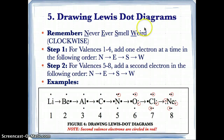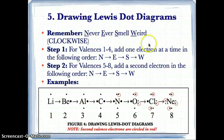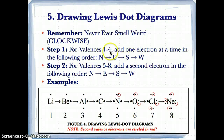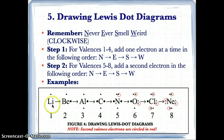Now let's learn how to draw Lewis dot diagrams. We need to remember one very important rule: 'Never Ever Smell Weird.' This mnemonic shows the direction valence electrons should be drawn in, starting at the north direction. N stands for north, E stands for east, S stands for south, and W stands for west. So we go clockwise: north, east, south, west. For valences 1 to 4, add one electron at a time in that order. Li, Be, Al, and C have 1 to 4 valence electrons respectively.